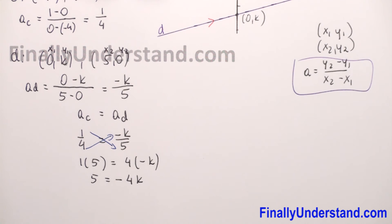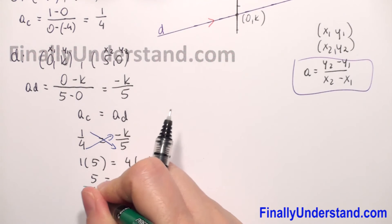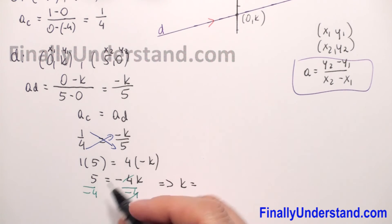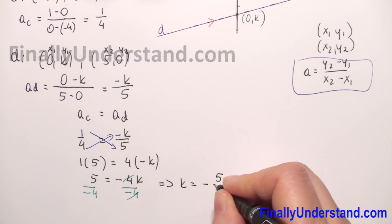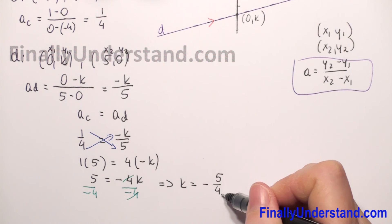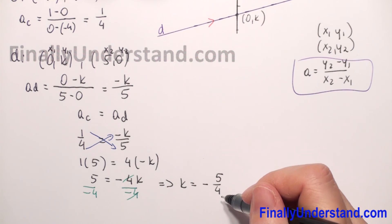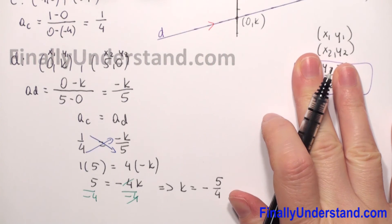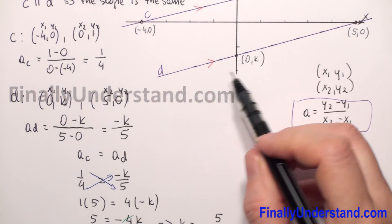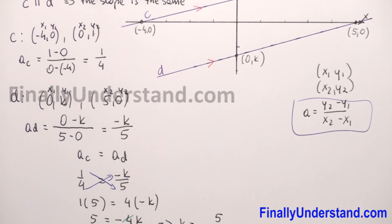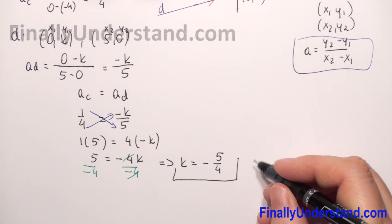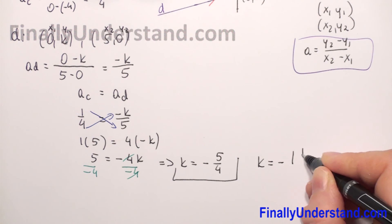We need to find K. I will divide both sides by negative 4. Negative 4 reduces and we have that K is equal to positive divided by negative, so it will be negative 5 over 4. We found that K equals negative 5 over 4, and our two lines are parallel. So this is the second coordinate of our point on line D. K is equal to negative 5 over 4.